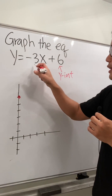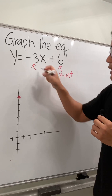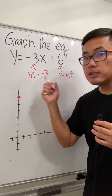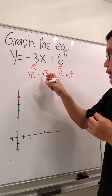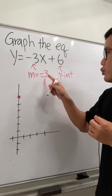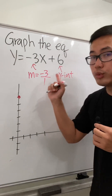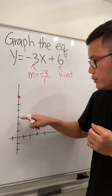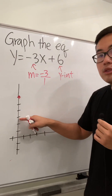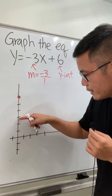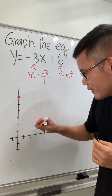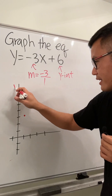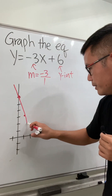And then we look at the slope, which is the coefficient of x. In this case, slope is equal to negative 3. But let's look at this as a fraction, so we will write it as negative 3 over 1. Negative 3 will tell us to go down 3 units from here — counting 1, 2, 3. And then the 1 will tell us to move to the right 1 unit, so move to here. And then we can just connect the dots.